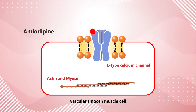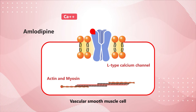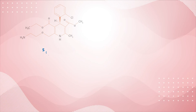Amlodipine binds to a pocket on the L-type calcium channel and blocks it, thereby restricting the entry of calcium into the cell. This causes vasodilation of the smooth muscle, resulting in a decrease in peripheral resistance and blood pressure.